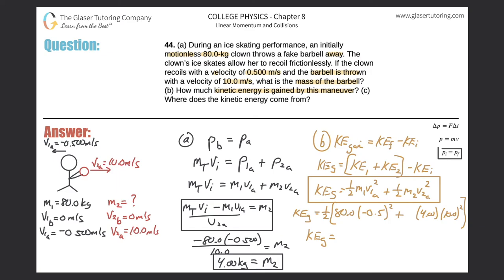so now back to business. We had 80 times 0.5 squared. I know it's negative, but remember, the two negatives cancel. Plus four times 10 squared. And we get 420. Multiply that by 0.5, and we get 210. So 210 joules. Alright,